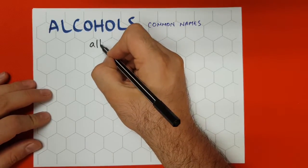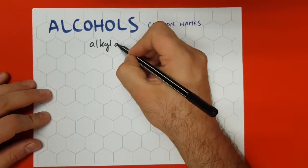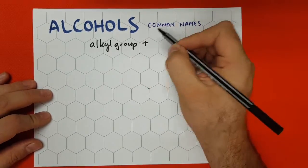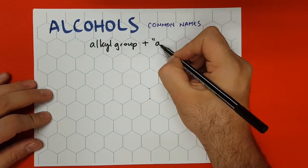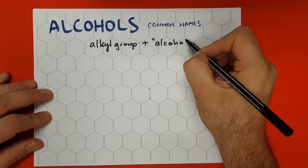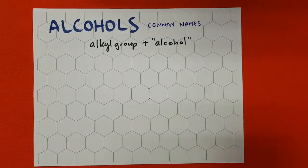So you have to name the alkyl group that's attached to the OH group plus the word alcohol itself to indicate that this is an alcohol with its common name. Now let's try a little example right here.